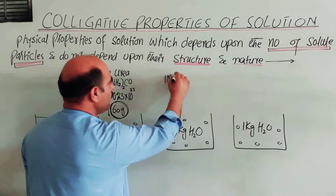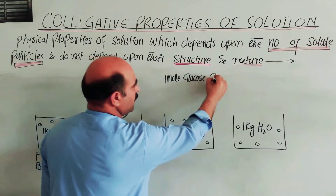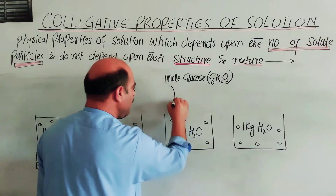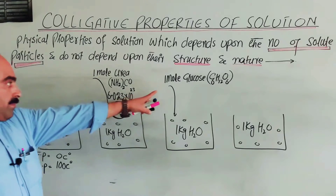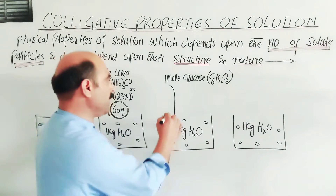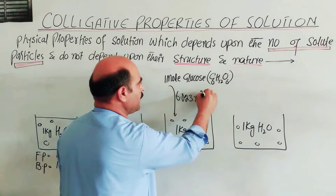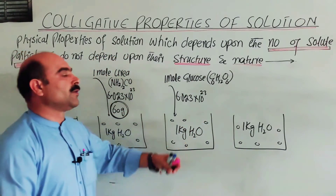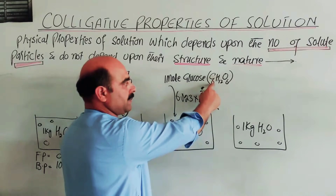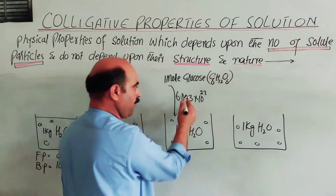The second container has one mole of glucose. The formula of glucose is C6H12O6. One mole of glucose contains 6.023 × 10²³ glucose molecules. The molecular mass of glucose: carbon is 6 × 12 = 72; hydrogen is 12 × 1 = 12; oxygen is 6 × 16 = 96. Total molecular mass is 180 grams.